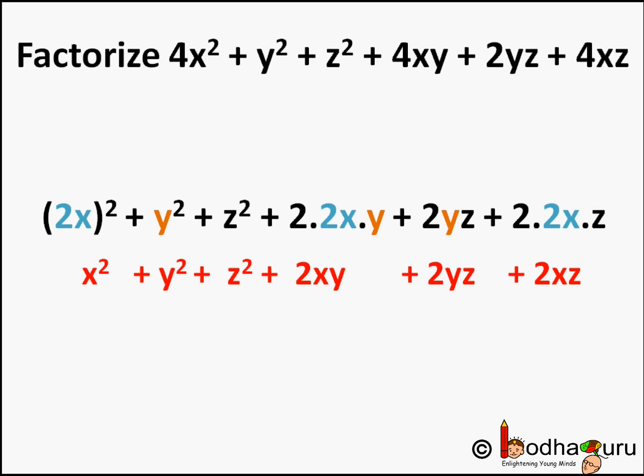4x square can be written as 2x whole square, 4xy can be written as 2 times 2x into y, and 4xz can be written as 2 into 2x into z. So this will turn out to be 2x plus y plus z whole square, which is 2x plus y plus z into 2x plus y plus z.